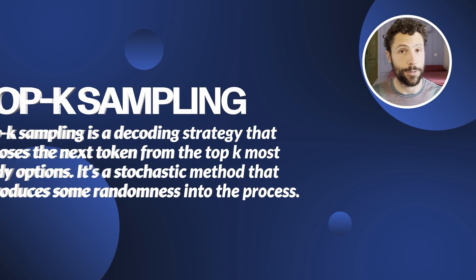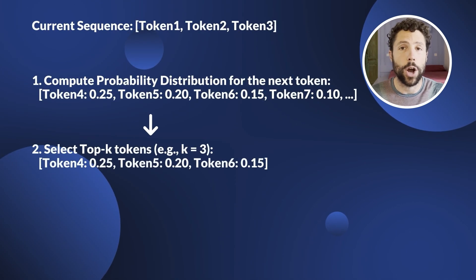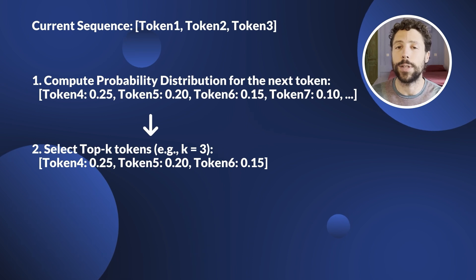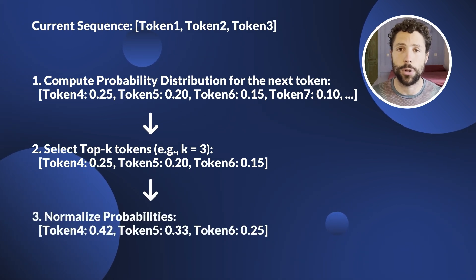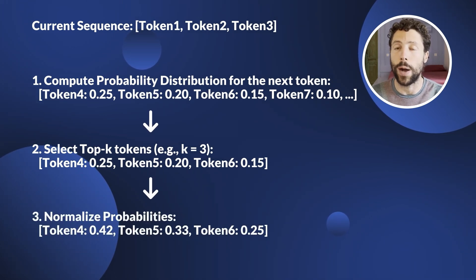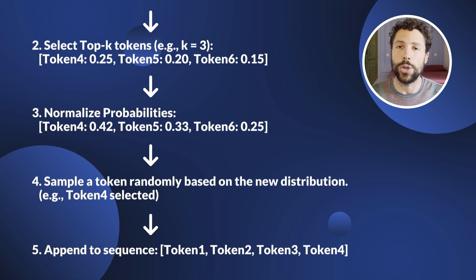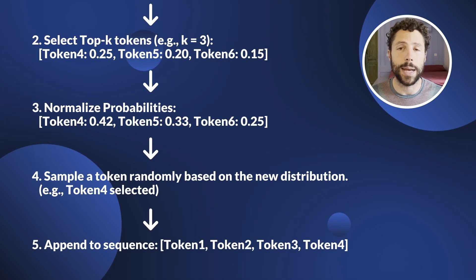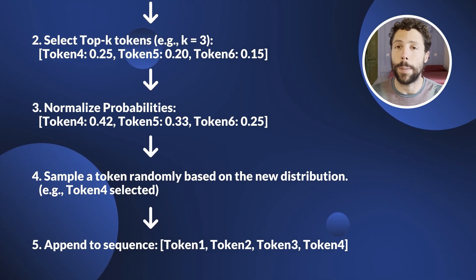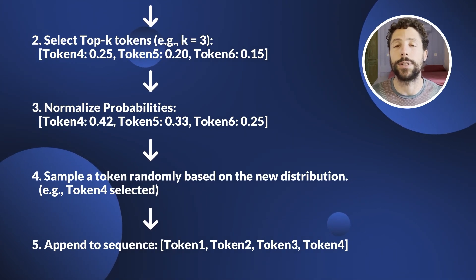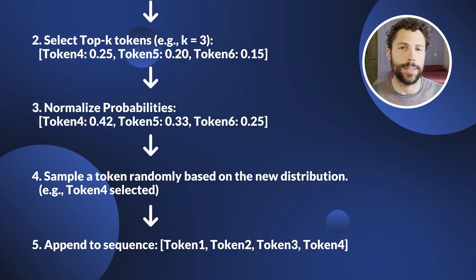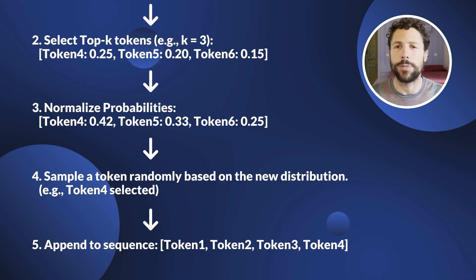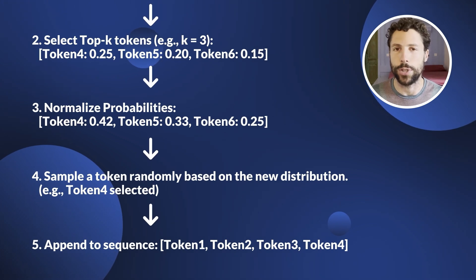TOP-K sampling is a simple stochastic decoding strategy that introduces randomness by sampling the next token from the TOP-K most probable choices, where K is a fixed value. It works as follows: consider only the TOP-K most probable next tokens for the current sequence; normalize the probabilities of these K tokens to sum to 1, creating a new truncated distribution; randomly sample a token from this new distribution and append it to the current sequence; then repeat until a termination condition is satisfied.